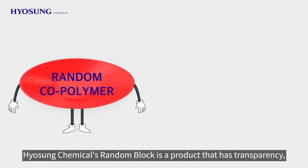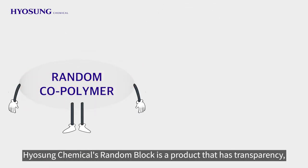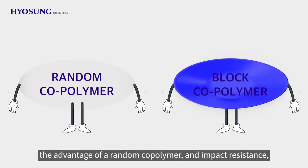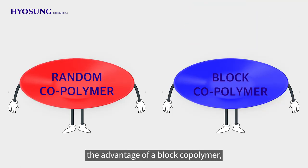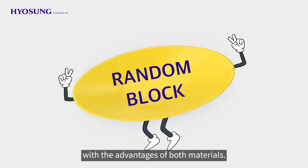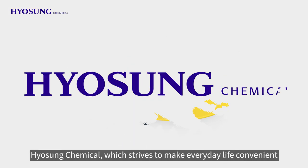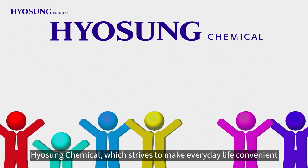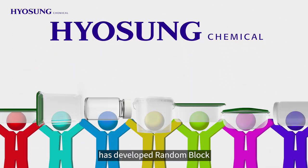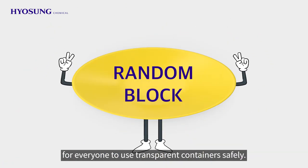Hyosung Chemical's Random Block is a product that has transparency — the advantage of a Random Copolymer — and impact resistance, the advantage of a Block Copolymer. It is a product literally equipped with the advantages of both materials. Hyosung Chemical, which strives to make everyday life convenient through material technology, has developed Random Block for everyone to use transparent containers safely.